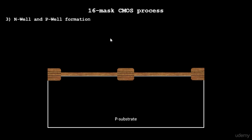As we said, N-well will be used for PMOS fabrication and P-well will be used for NMOS fabrication. Both can't be done at the same time. We need to protect one area while we fabricate the other. So let's see how we do that.